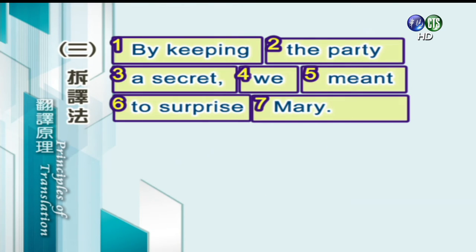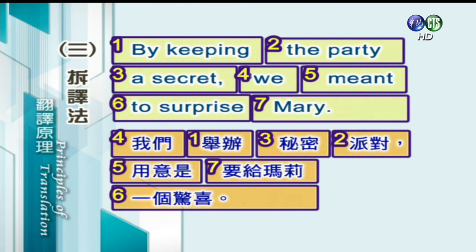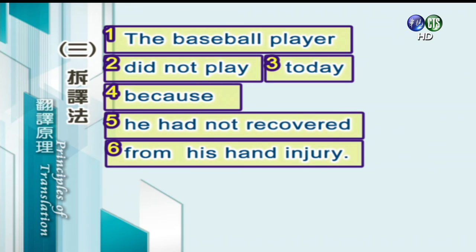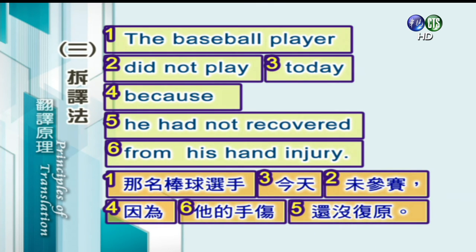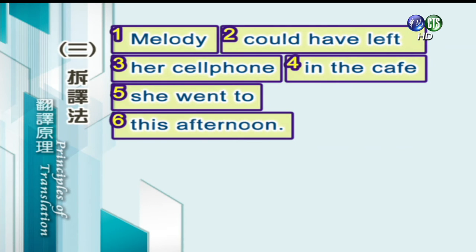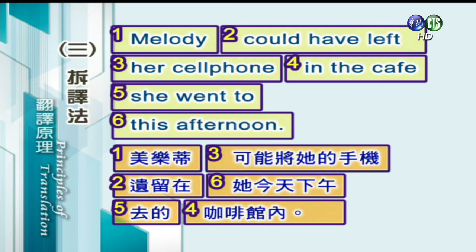By keeping the party a secret, we meant to surprise Mary，译成：我们举办秘密派对，用意是要给玛丽一个惊喜，排成四、一、三、二、五、七、六。The baseball player did not play today because he had not recovered from his hand injury，译成：那名棒球选手今天未参赛，因为他的手伤还没复原，排成一、三、二、四、六、五。Melody could have left her cell phone in the cafe she went to this afternoon，译成：Melody 可能将她的手机遗留在她今天下午去的咖啡馆内，排成一、三、二、六、五、四。